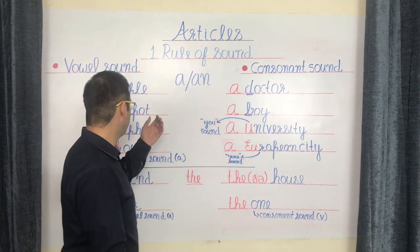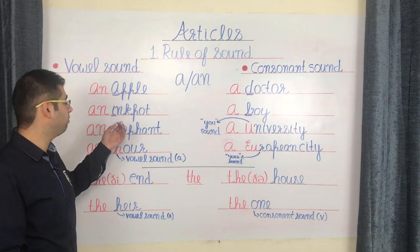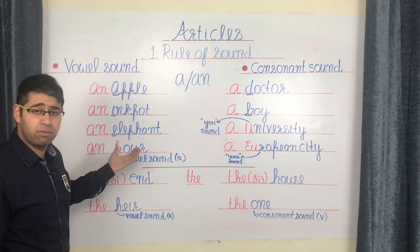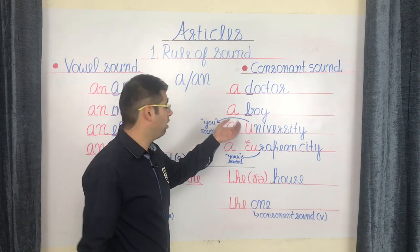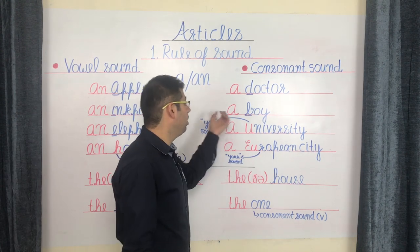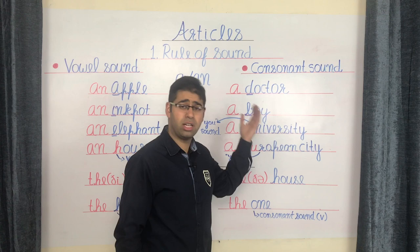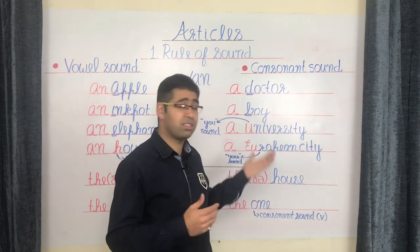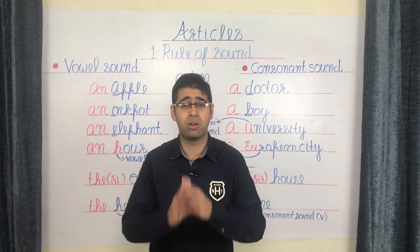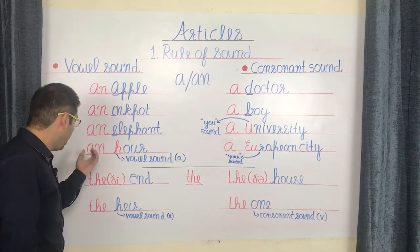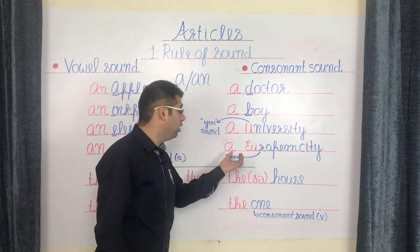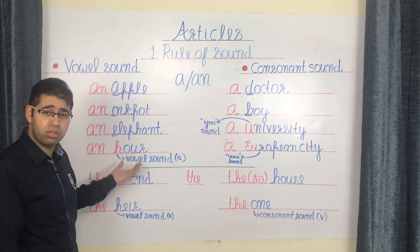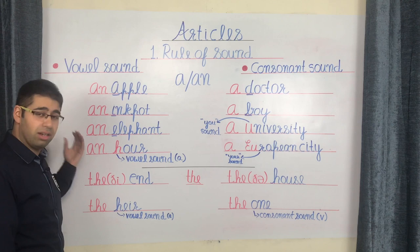Let's have a look at some examples. On the vowel side you have examples such as 'an apple,' 'an ink pot,' and 'an elephant.' Whereas on the consonant side you have examples such as 'a doctor,' 'a boy,' and so on. Now this rule does give rise to a contradiction: if this is the case, then why do we come across expressions such as 'an hour,' 'a university,' 'a European city'?